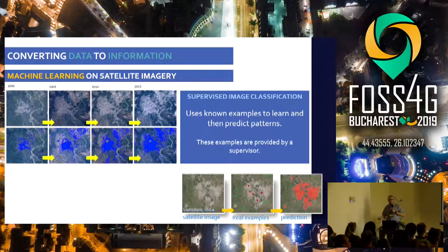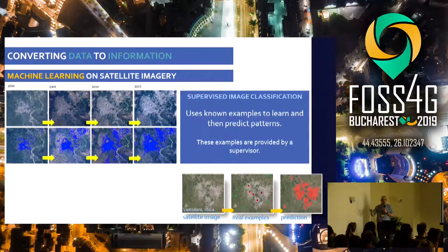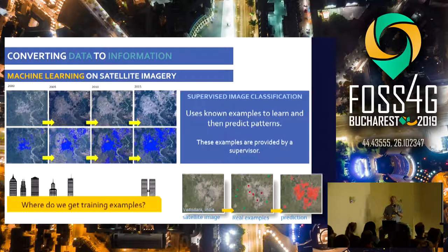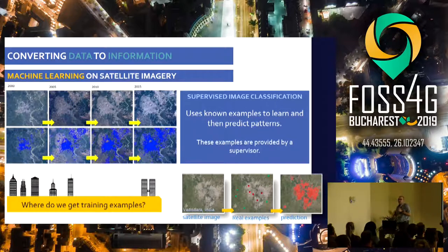In the case of urbanization, we need examples of real urban areas to train the machine — we ask it to learn what are the characteristics of a built-up pixel, what are the characteristics of a vegetation pixel. Based on what the machine learned from all the examples we provided, it will try to predict the class of any pixel in the world. The main challenge in supervised image classification is where do you get training data, especially to map all the built-up land cover and all urban areas in the world.